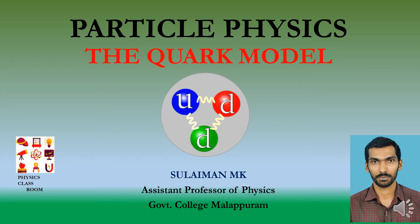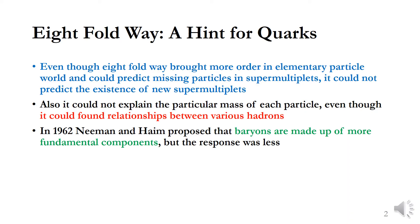In this class, we will discuss the quark model in a historical way. In the last few classes, we discussed the Sakata model, the 8-fold way, and such efforts to make order in the world of elementary physics. We found that the 8-fold way brought more order in the elementary particle world and it could predict some missing particles in supermultiplets, like omega minus, but it could not predict the existence of new supermultiplets.